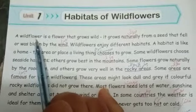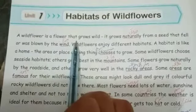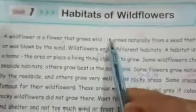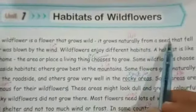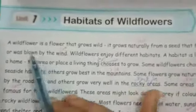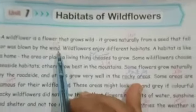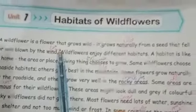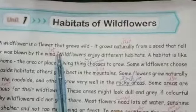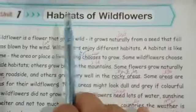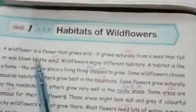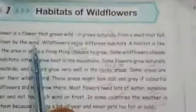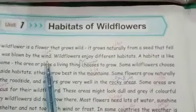A wildflower is a flower that grows wild. It grows naturally from a seed in a field or was blown by the wind. This is the power of wind and the power of seed — that it grows wild.